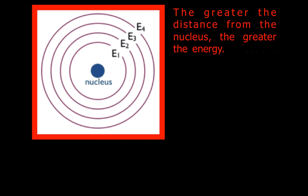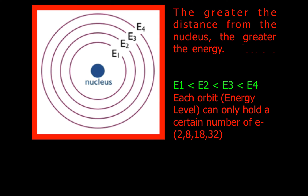The greater the distance from the nucleus, the greater the energy. The energy associated with the first orbit is less than the energy associated with the second orbit, less than the third, less than the fourth. The closer you are to the nucleus, the less energy. In Bohr's model, each orbit can only hold a certain number of electrons.